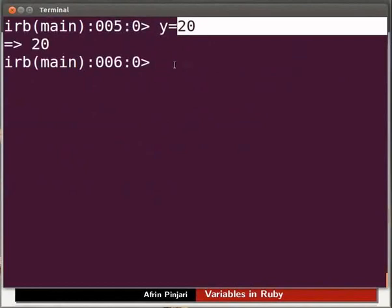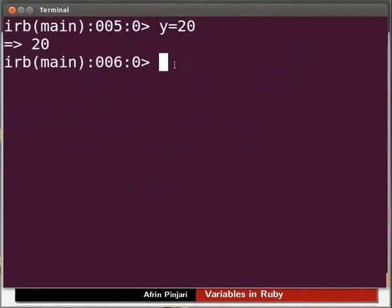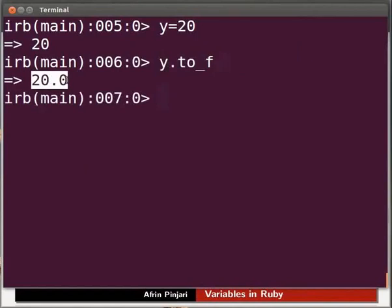We will now convert y to a floating point value using to_f method. Type y dot to_f and press Enter. We get the value as a float.